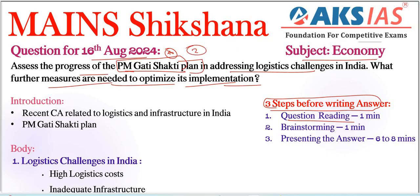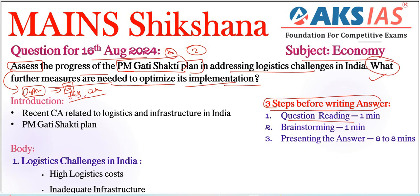Next, what are the important question tags here? 'Assess' is one important question tag. Assess means we need to provide some important justification as well — including examples, important facts, or some data. 'What further measures are needed to optimize its implementation?' — 'what' is a regular or common keyword where we need to mention the important points.